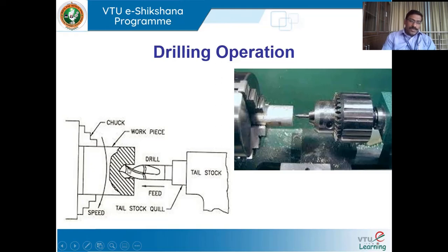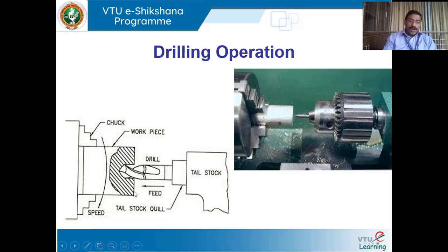In order to get holes of different user-defined diameters, the preferred operation is boring operation. Boring operation is one such operation wherein you can increase a previously drilled hole. In a lathe, drilling can be performed by holding the drill chuck in the tailstock and holding the workpiece in the chuck, so that when the chuck rotates, the job rotates. When the drill is forced inside the rotating job, you get a hole of the desired diameter.